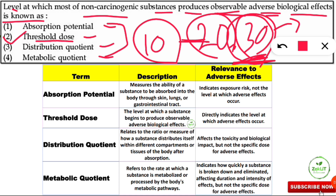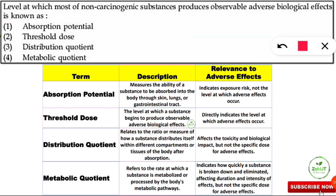You need to make a table to know all four terms. First is absorption potential — its definition is that it measures the ability of a substance to be absorbed into the body through skin, lungs, or gastrointestinal tract. Its relevance to adverse effects is that it indicates the exposure risk, not the level at which adverse effects occur. So we cannot say at what dose a substance produces adverse effects from absorption potential alone.